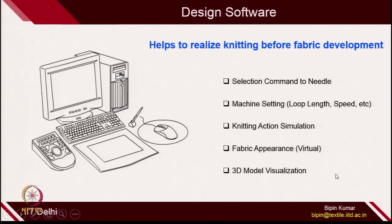You can change the color of the yarn at any time to look at the surface. You can also do 3D model visualization — once you make the fabric, you can use a 3D model where the model can wear that fabric virtually, and you can see how the fabric will look on a 3-dimensional shape. It's a complete package: before wasting any yarn, you can realize the structure of fabric on a 3D virtual model. This is the beauty of design software.